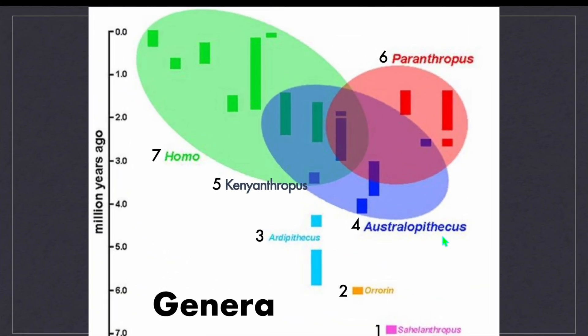On your screen you can see the timeline of different genera within our tribe, the Hominini tribe. The genus Sahelanthropus existed about 7 million years ago. Between 6.25 and 6 million years ago, the genus Ororin existed in Africa. The genus Ardipithecus evolved between 6 and 4.2 million years ago.